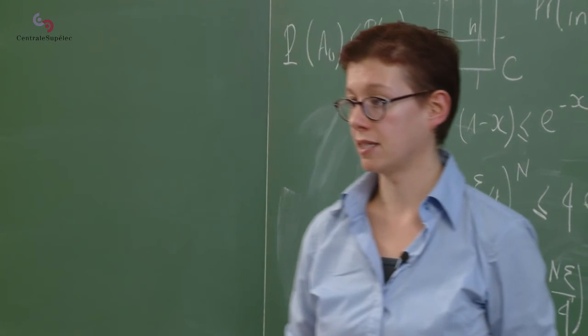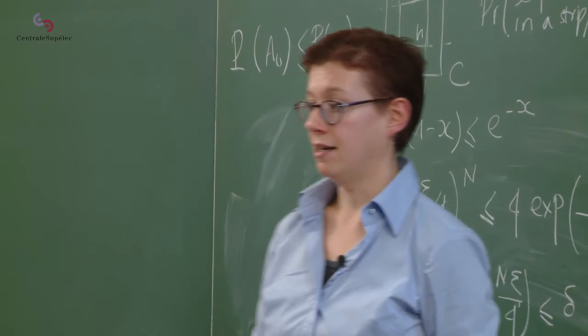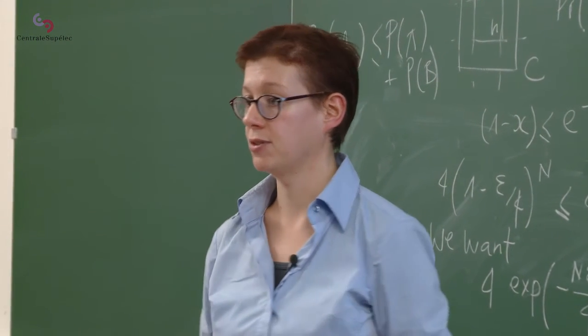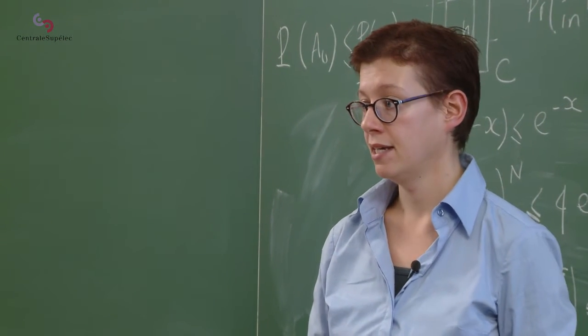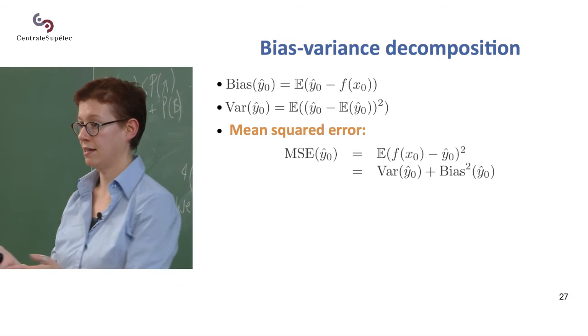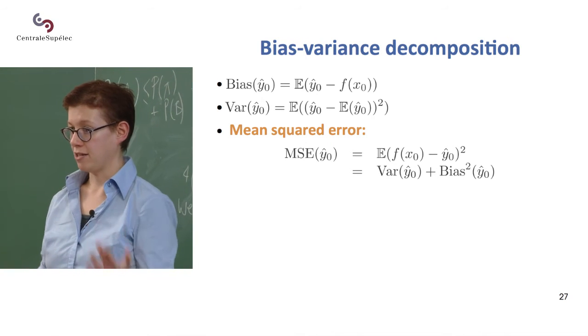And so what this means is that there's no free lunch. If you have a low bias, you'll have a high variance. If you have a low variance, you'll have a high bias. So you'll have to find the right trade-off between both.